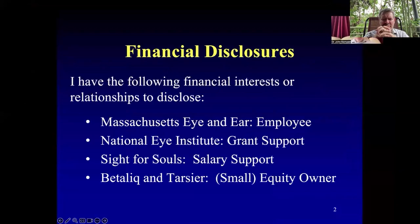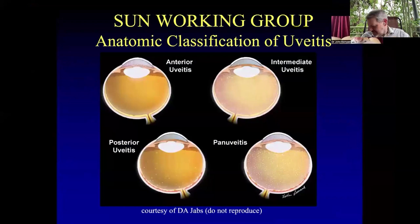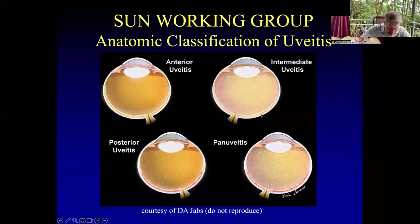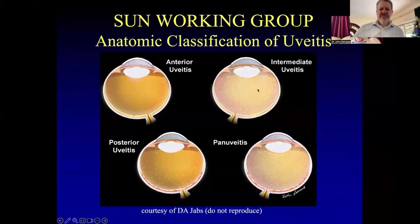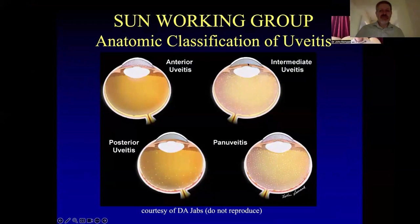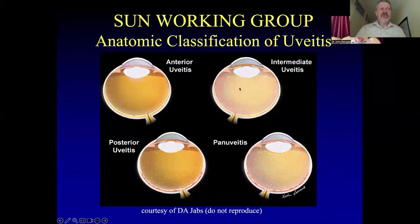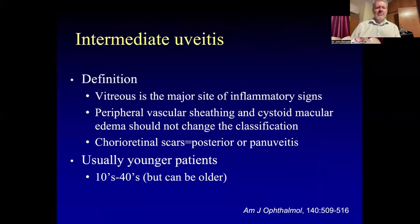My name is John Kempen and I'm giving the talk on practical management of intermediate uveitis. With intermediate uveitis, the inflammation is seen primarily in the vitreous, and the location of inflammation is in the vitreous or in the pars plana or both. You can see some cells in the anterior chamber, but it should be predominantly in the vitreous, with haziness or debris like snowballs.